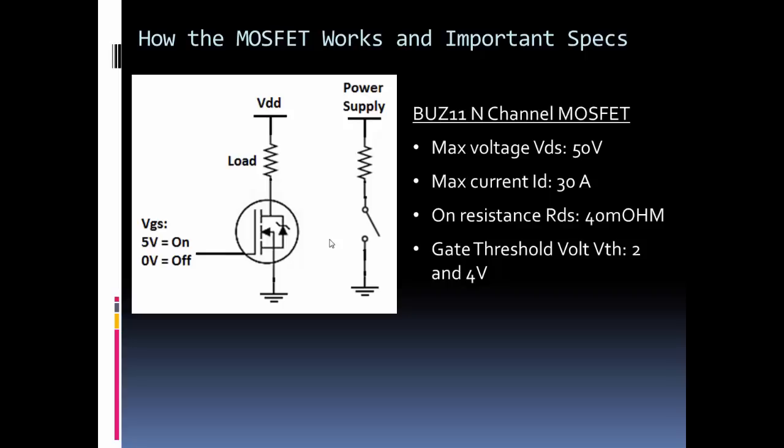Our MOSFET will turn off or the switch will open when the voltage is below 2 volts. That's what the data sheet is guaranteeing. So even if it wasn't quite zero, let's say it was 1 volt, the MOSFET would still stop conducting.